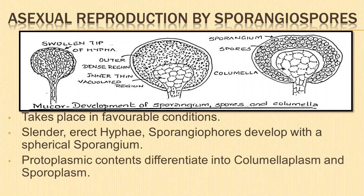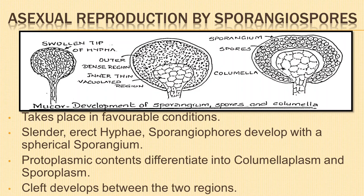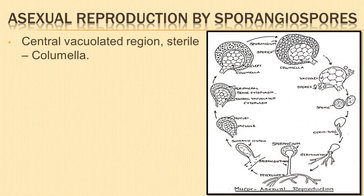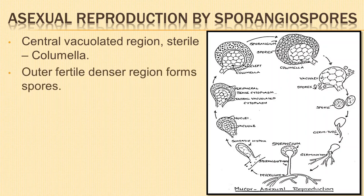The protoplasmic contents migrate to the spherical head and become differentiated into a central vacuolated region called the columella plasm, and an outer denser region containing a number of nuclei known as poroplasm. Soon, a dome-shaped cleft appears and separates the outer denser protoplasm from the central vacuolated region. The central vacuolated region is sterile and is called the columella. The protoplasm of the outer fertile denser region forms a number of small multi-nucleate masses, each of which is a spore, and its wall gets thickened.